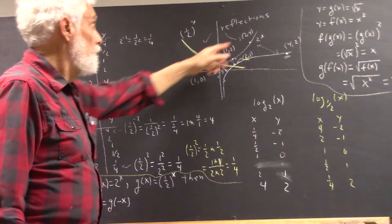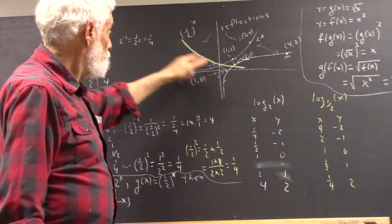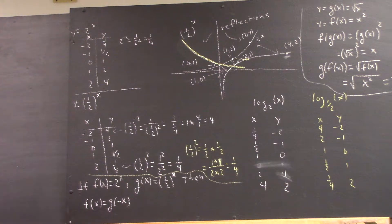How do these graphs compare? Clearly, this graph is a reflection through the y-axis of this graph. Okay?